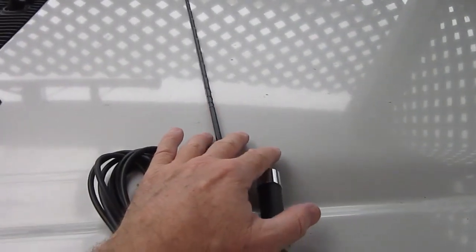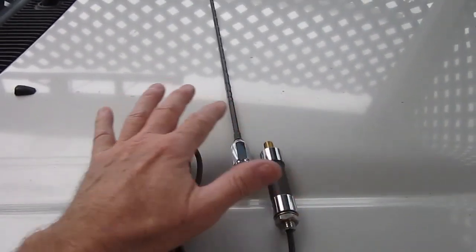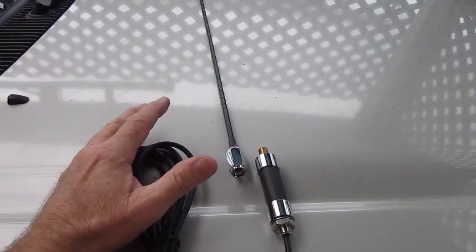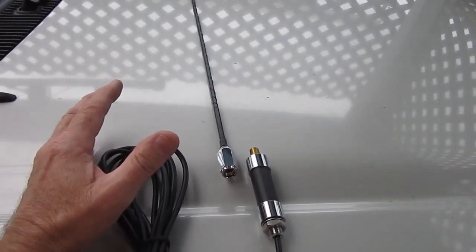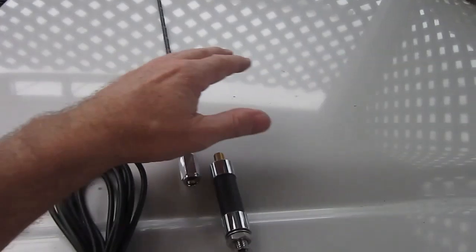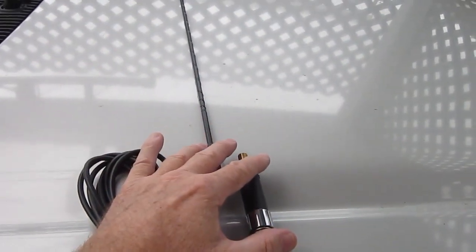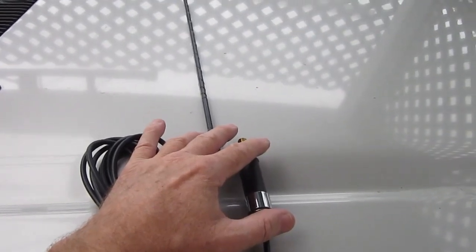Now, the other thing I forgot to mention is if you're four-wheel driving and you've got a set of bull bars, bearing in mind that bull bars are not providing a ground plane, this would be an ideal antenna to mount on a bull bar as well.